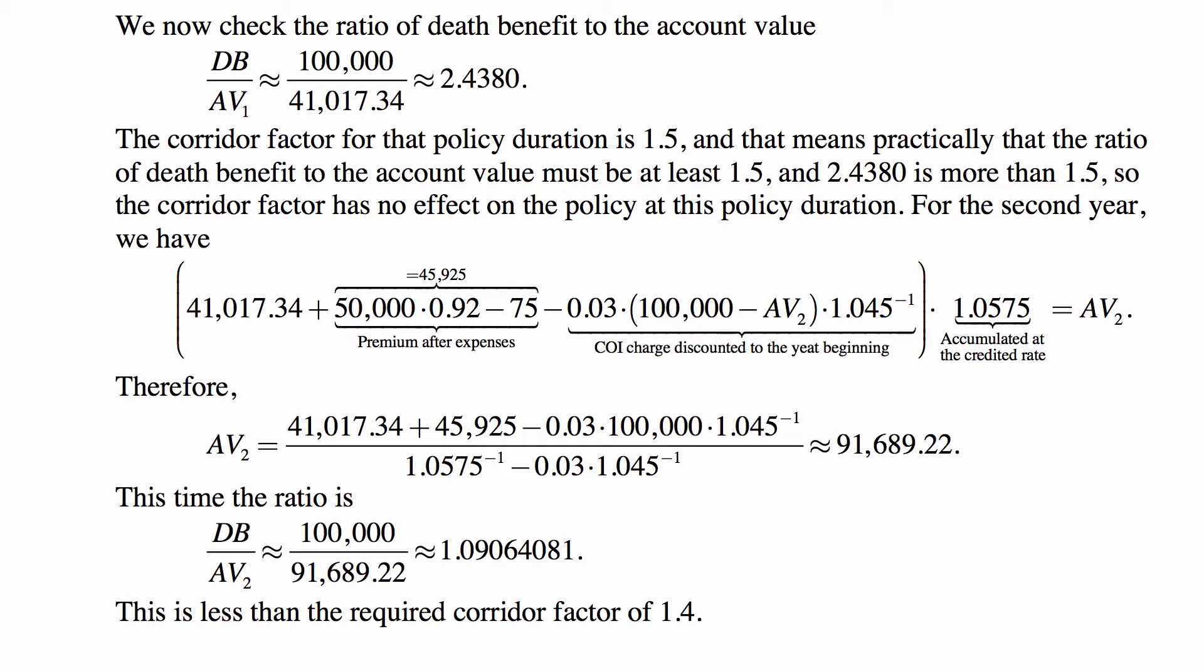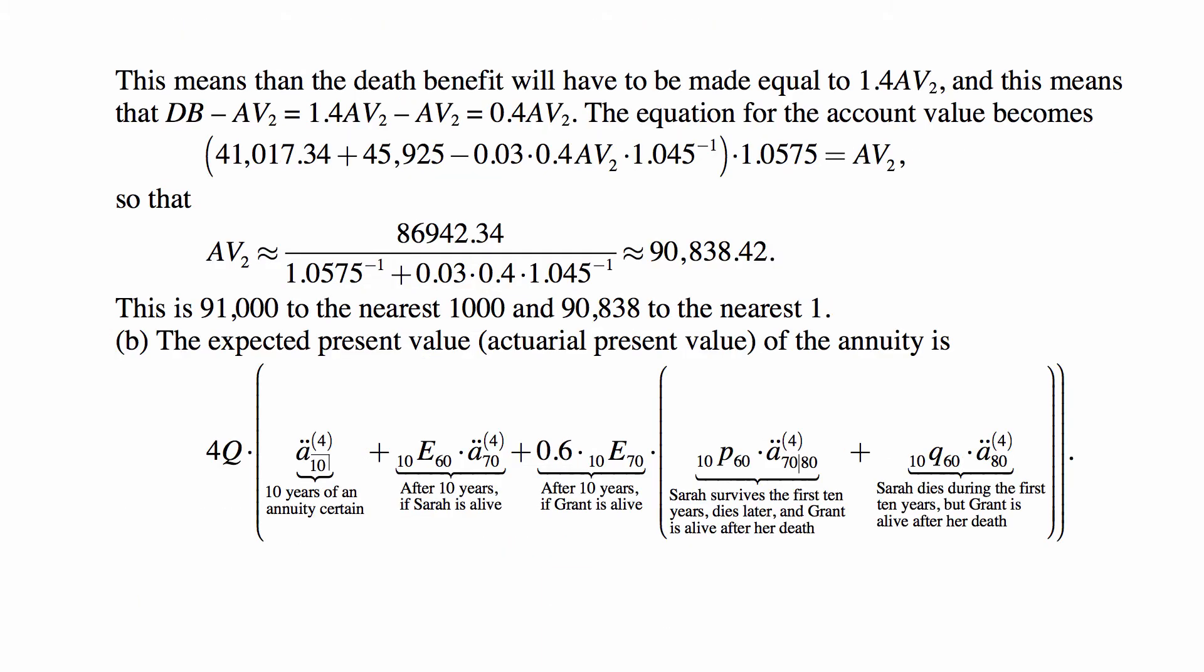For the second year, we have the account value at time 1, plus premium after expenses, minus the cost of insurance charge, accumulated at the credited rate, is equal to account value at time 2. The account value is the only unknown, so we solve it. We get 91,689.22. Now, this time the ratio is below the corridor factor, which means that the death benefit will have to be adjusted, so that the ratio of the death benefit to account value is exactly the corridor factor of 1.4. So the death benefit will have to be made equal to 1.4 times account value at time 2. And this means that death benefit minus the account value will be equal to 0.4 times account value at time 2.